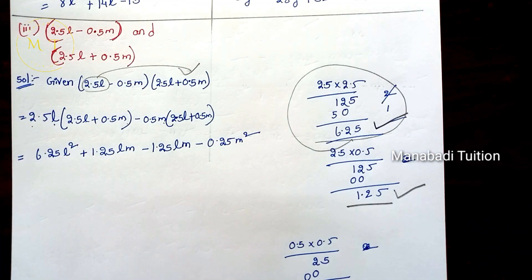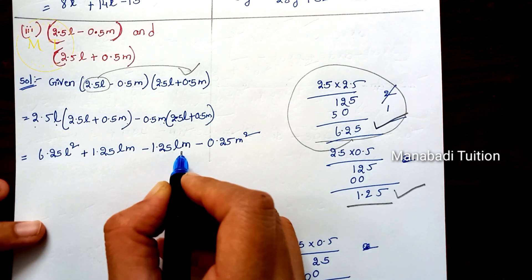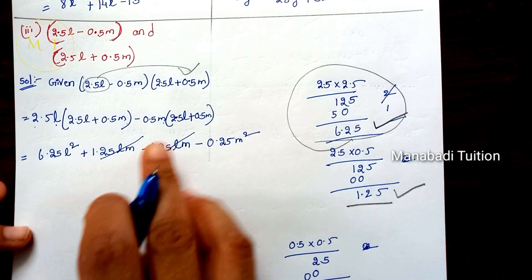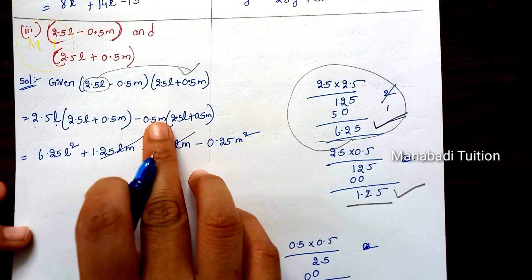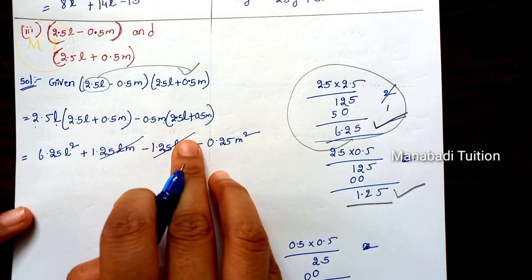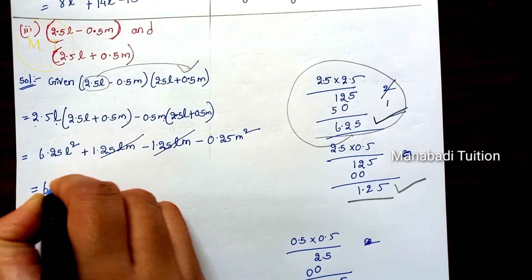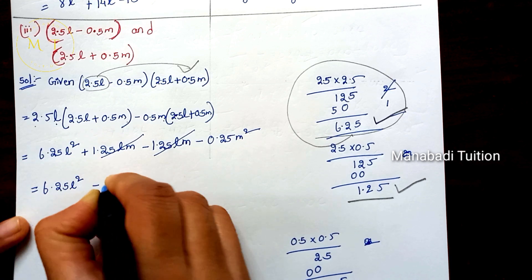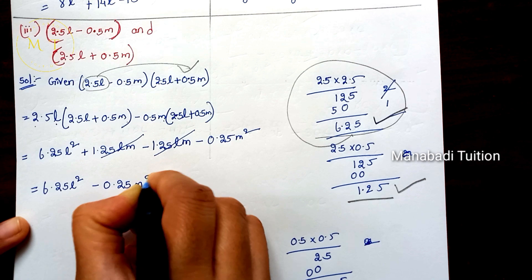The 1.25LM terms cancel each other out. And minus 0.5 times 0.5 gives 0.25, and M times M gives M squared. So the answer is 6.25L squared minus 0.25M squared.